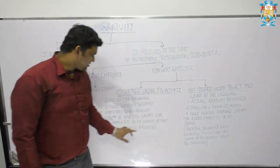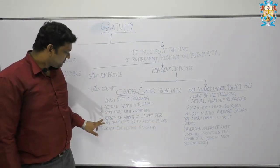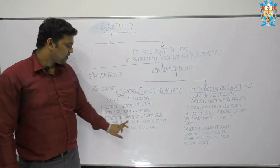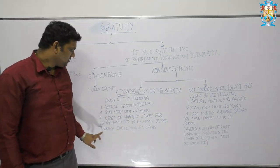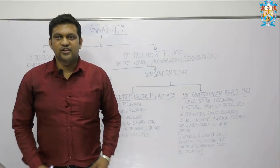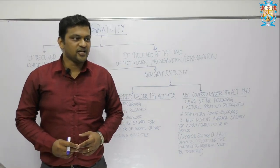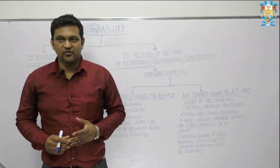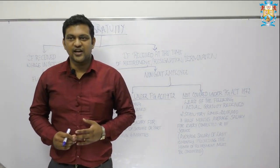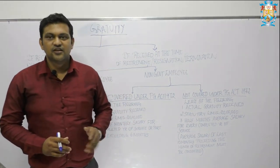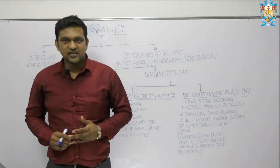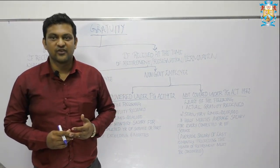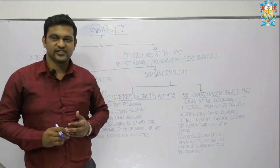The third rule says 15 divided by 26 of monthly salary for every completed year of service, or part of the year in excess of six months shall be taken as one full year. For example, four years and nine months will be treated as five years, and four years and five months will be treated as four years itself.